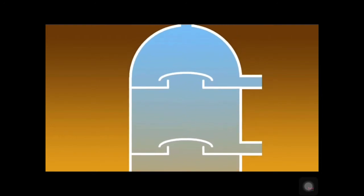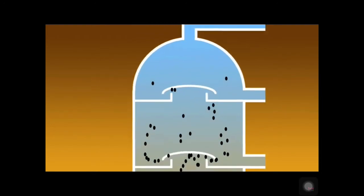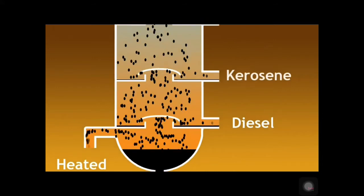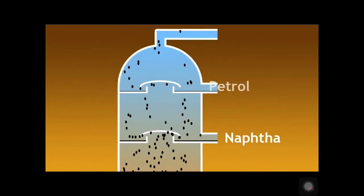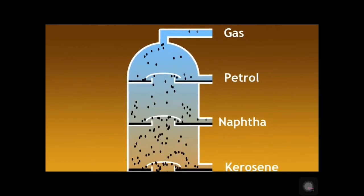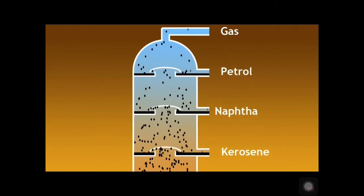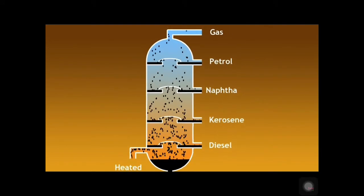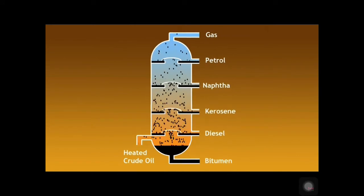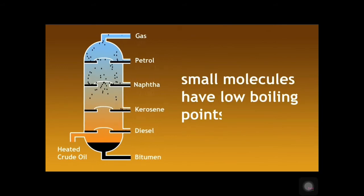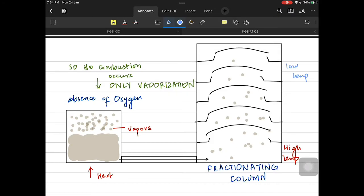The vapors start separating on the basis of their different boiling points. The ones with lesser boiling points go to the top and the ones with higher boiling points remain at the bottom. Bitumen and diesel have very high boiling points and are released from the bottom, but naphtha and petrol have very low boiling points so they are released from the top. Petrol and gas have shorter carbon chains and fewer carbon atoms per molecule, so their boiling point is low.